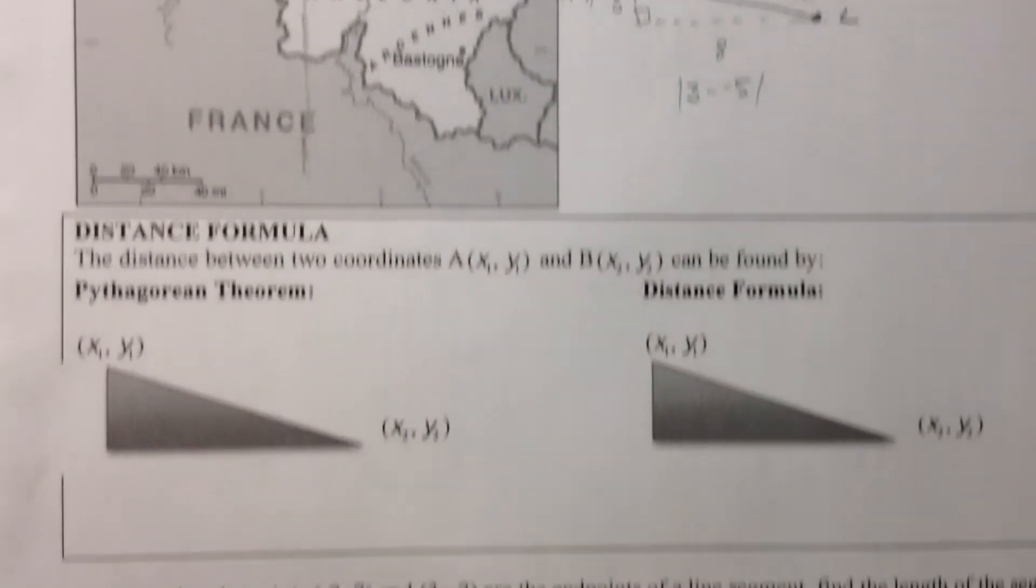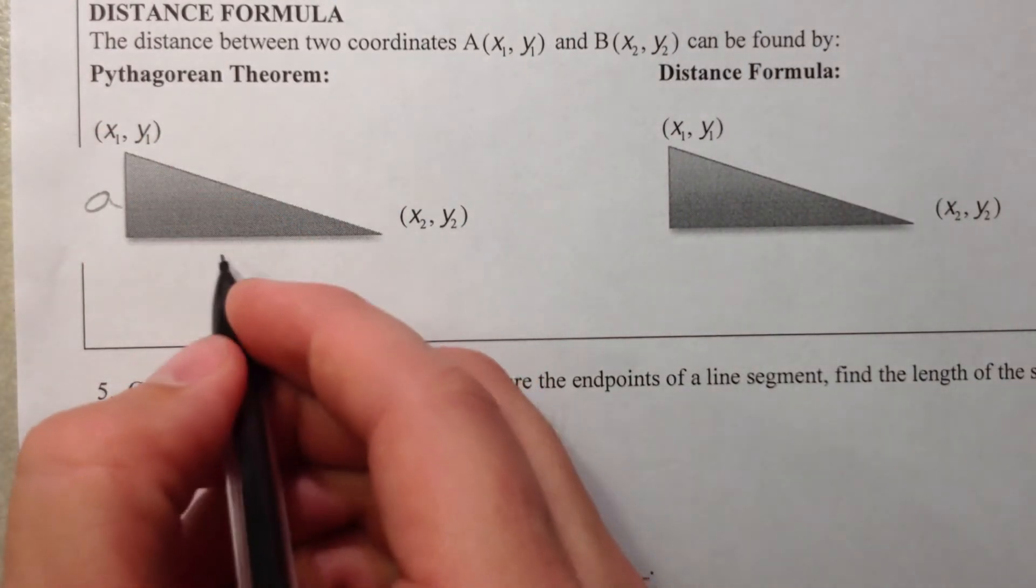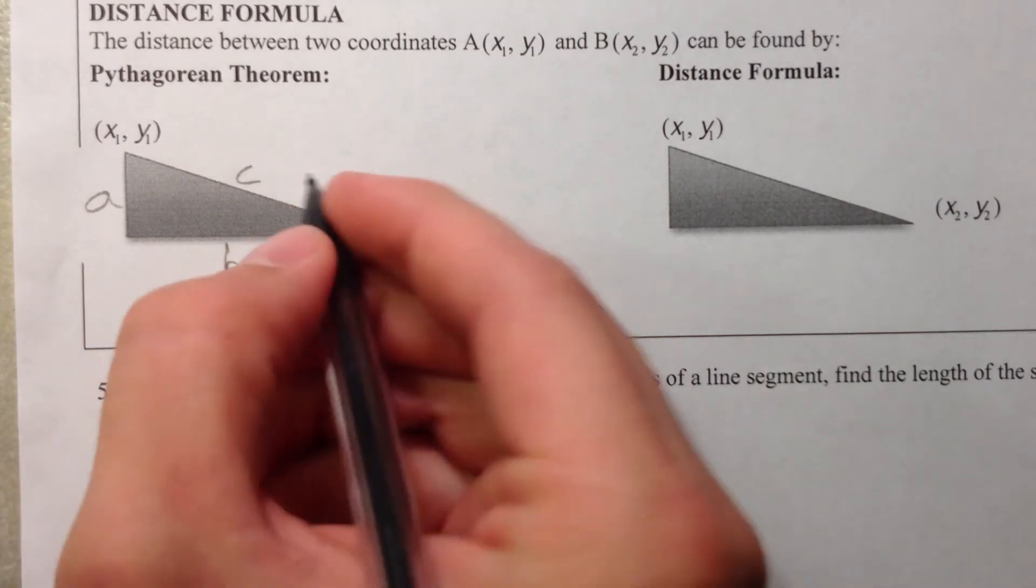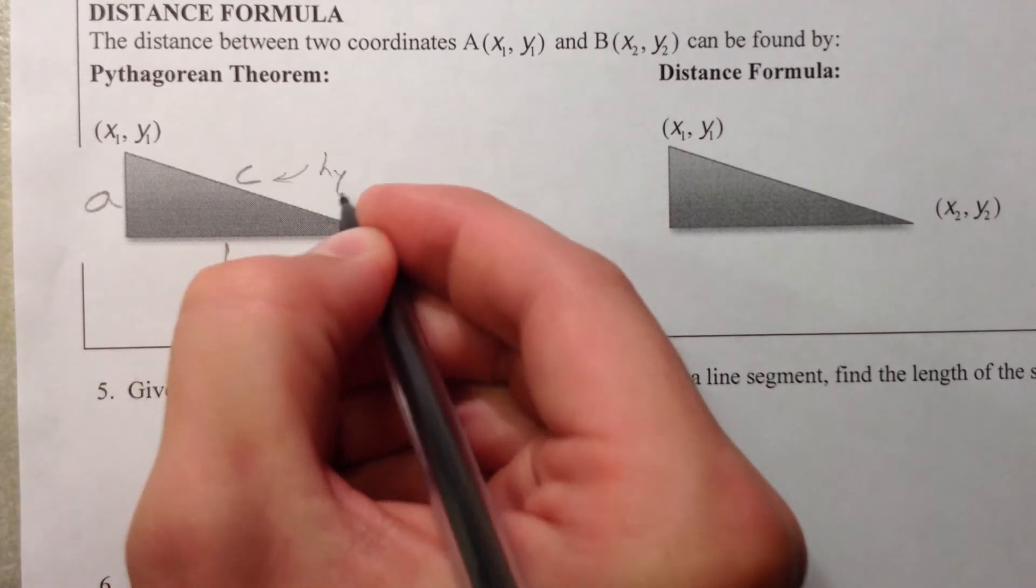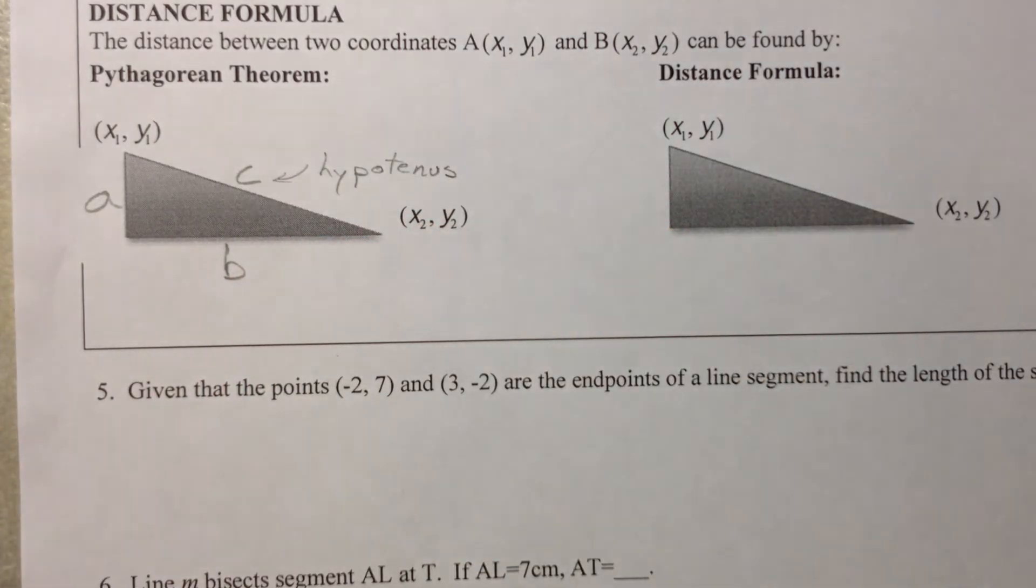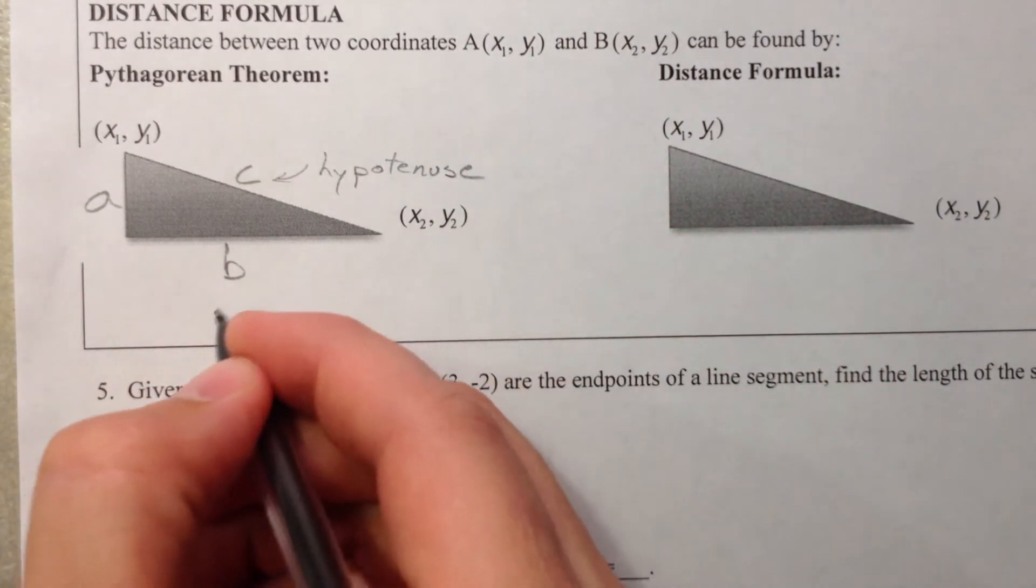The Pythagorean theorem says, if you have some side A, and some side B, and the hypotenuse is C, call this the hypotenuse. Fancy word. Let's call it the hypotenuse, and these are the legs.